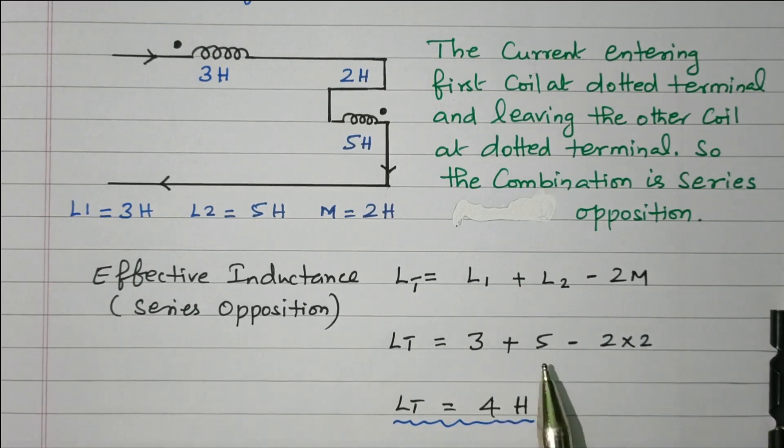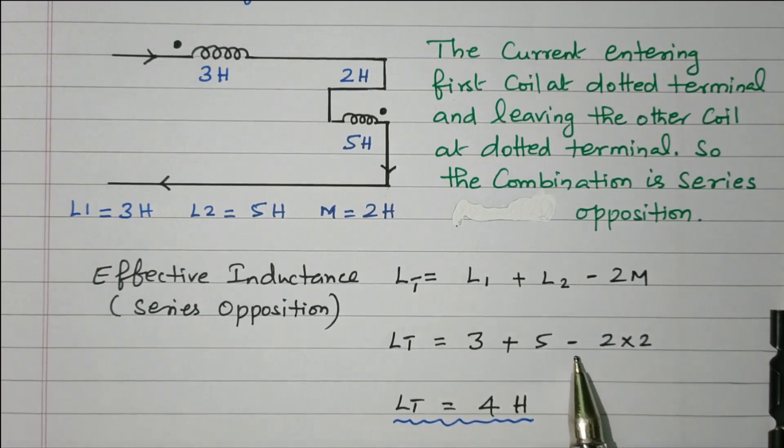So L1 is 3 Henry, L2 is 5 Henry, minus 2M is 2 Henry. So 3 plus 5 is 8, minus 2 times 2 is 4. 8 minus 4 is 4 Henry. The resultant effective inductance is 4 Henry.